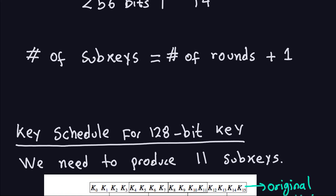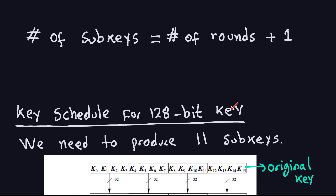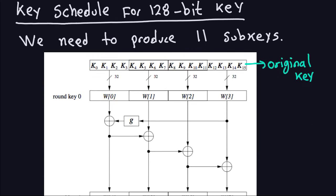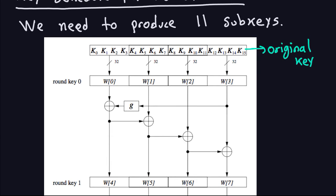So this key schedule for the 128-bit key requires producing 11 subkeys. This is the diagram for the first round of the key schedule. The first part here is just the original key. The K0, K1, up to K15 that you see there — you take 128 bits and divide it into bytes. Every K here, K0, K1, K2, K3, and so forth, all of them represent bytes, 8 bits each. That's why we have 16 of these K's from 0 to 15.